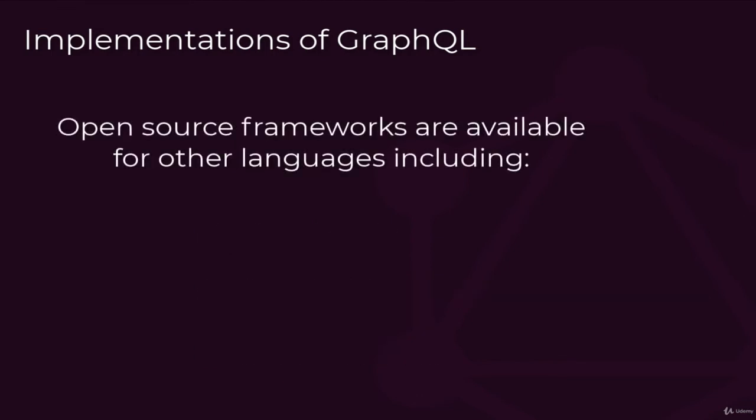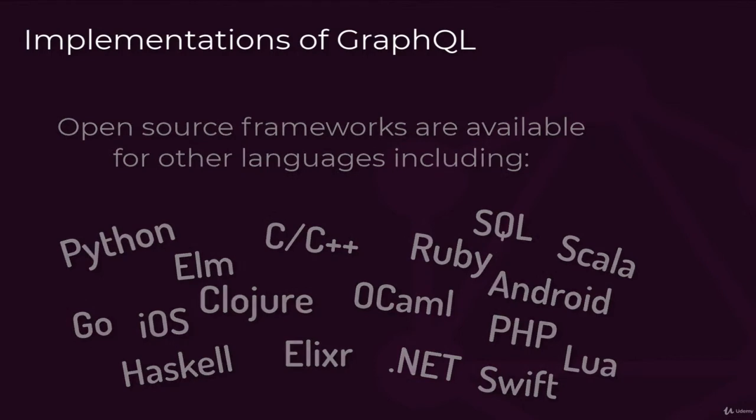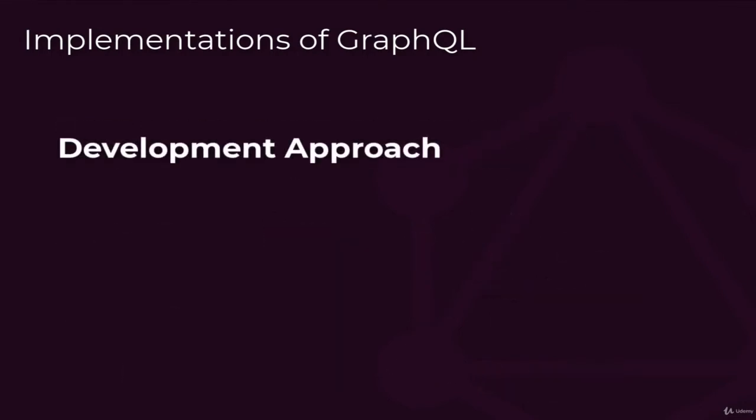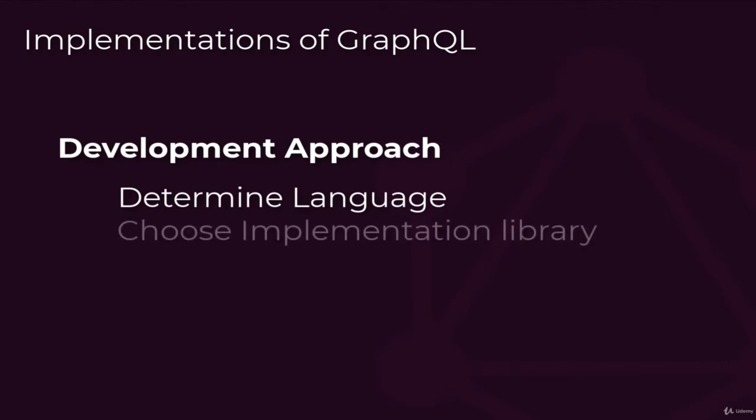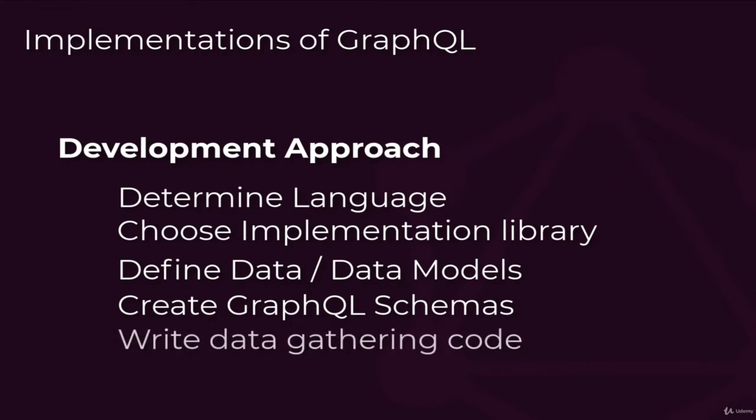If you find yourself needing to develop GraphQL interfaces in other languages, just do a quick search. You'll find common libraries for virtually every library, including Python, Ruby, even Clojure. The overall development approach will be to determine what language you need to deploy, then find an appropriate implementation library for your situation. Once everything is wired up, you can determine what data and data models you'll have to work with. Next, you'll create a GraphQL schema for your operations and for your types. Finally, you'll write the bits of code that actually gather the required data for each of your individual GraphQL types.